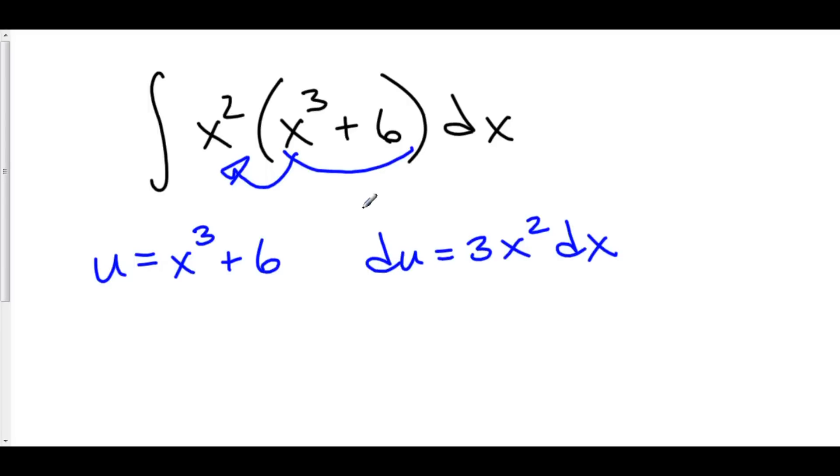Well, I don't actually have a 3x squared here. I only have an x squared dx. So, to make this look a little bit more like what we have here, I can multiply both sides by 1 third to get rid of that 3.